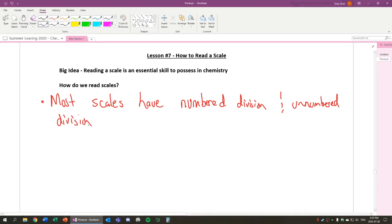We use these two to help us read a scale. Now both of these are called what we call calibrated divisions. Why are they called calibrated? Because they have been calibrated, aka set, to be those numbers.